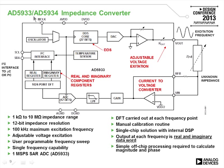The AD5933 impedance converter integrates a DDS core, DAC, driver for the excitation frequency, current-to-voltage converter, amplifier, low-pass filter, 12-bit A/D, and a 1024-point discrete Fourier transform that produces real and imaginary parts at each frequency via a simple I2C interface. This works for impedances between 1k and 10 megaohms, with 12-bit resolution and up to 100 kHz maximum excitation frequency. The DFT is performed internally—it's essentially a single-chip solution.